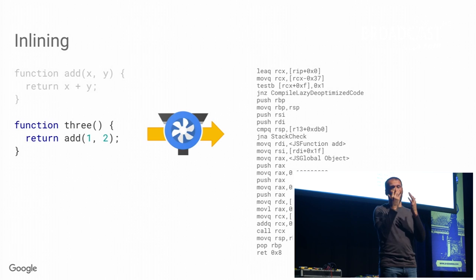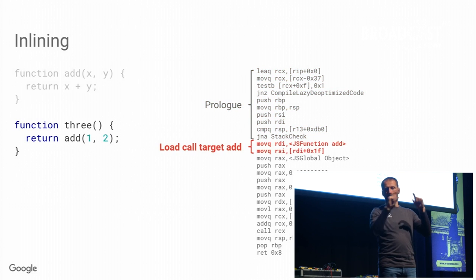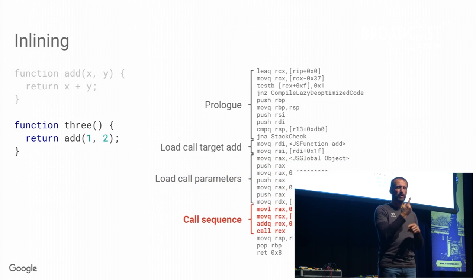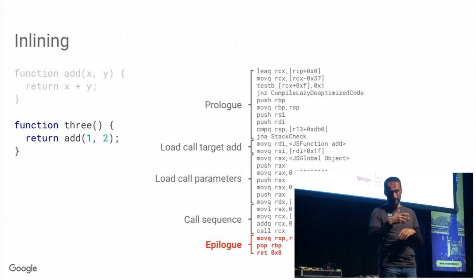The same for function 'three'. If you look at the code we generate for 'three', we again see the prologue, then we load the target for the call which is the function 'add', then we push the parameters 1 and 2, then we perform the actual call and eventually return from the function. That's really a lot of code just to do 1 plus 2.